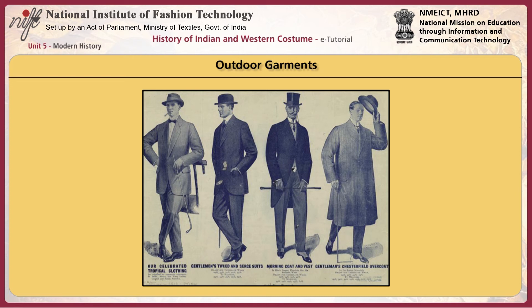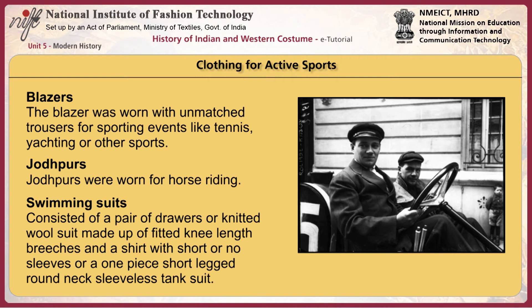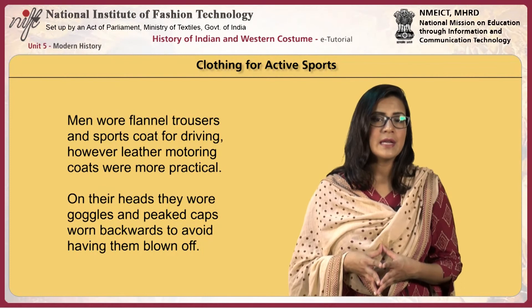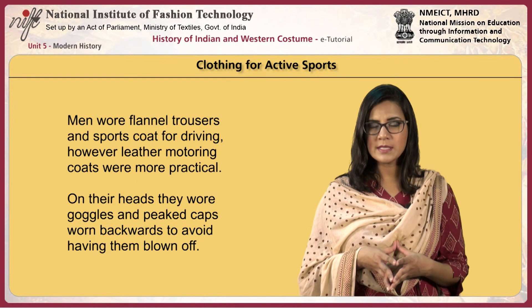Overcoats were full to accommodate the wide-cut suit of the first decade and became more fitted in the second. Top coats ended at the hip. Basic styles included chesterfields, ulsters, inverness, mackintosh, and trench coats. The blazer was worn with unmatched trousers for sporting events like tennis, yachting, or other sports. Jodhpurs were worn for horse riding. Swimming suits consisted of a pair of drawers or knitted wool suit made up of fitted knee-length breeches and a shirt with short or no sleeves, or a one-piece short-legged round-necked sleeveless tank suit. Men wore flannel trousers and sports coat for driving; however, leather motoring coats were more practical. On their heads, they wore goggles and peaked caps, worn backwards to avoid having them blown off.